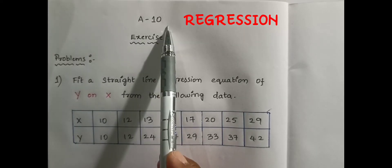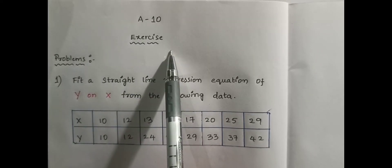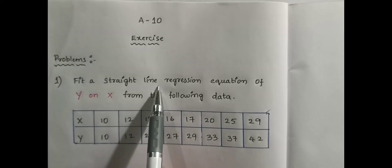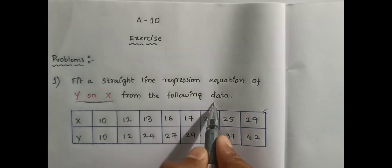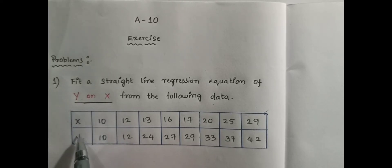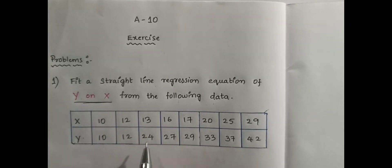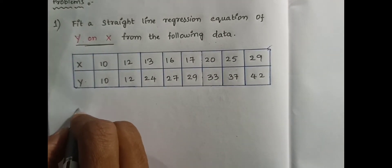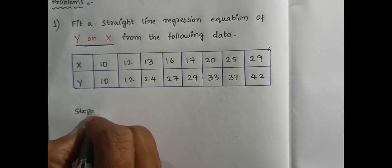In this video I am going to discuss problems on the regression topic. Let's discuss problem number one: fit a straight line regression equation of y on x. It is asking to find y on x from the following data. The data contains two variables, x and y, and their respective values. Let's see how the solution will be obtained.